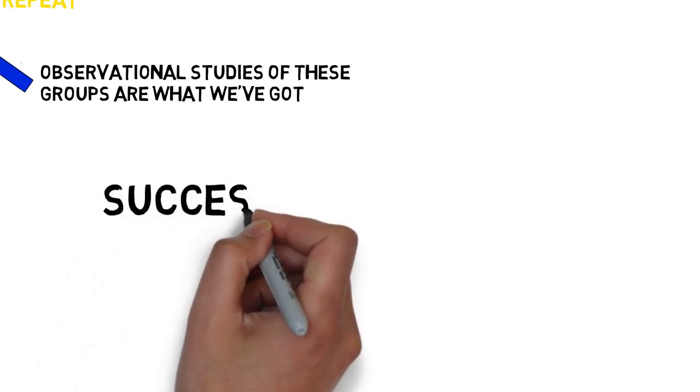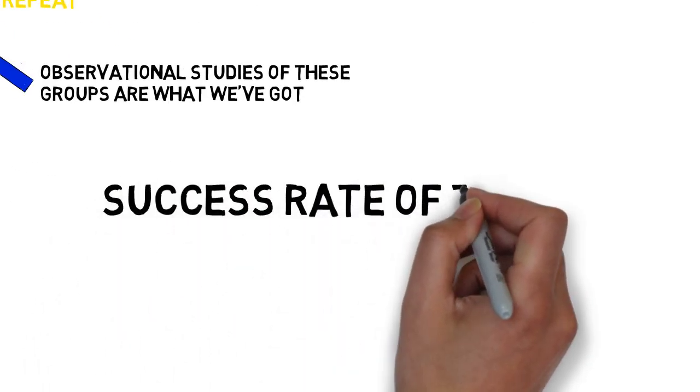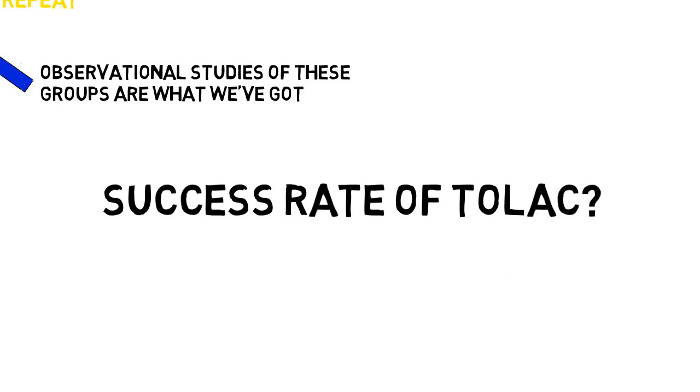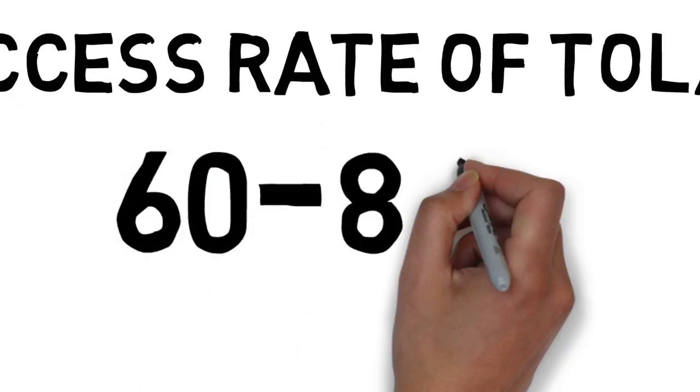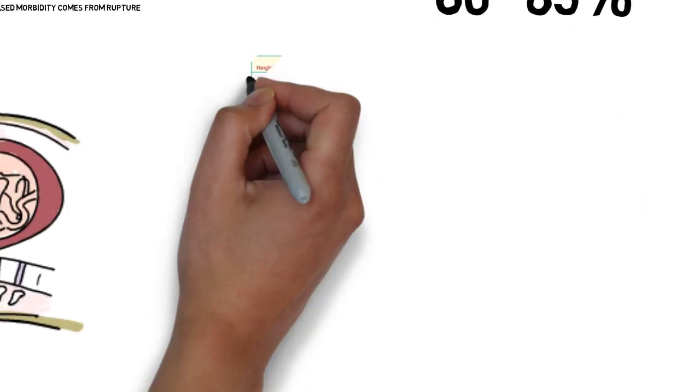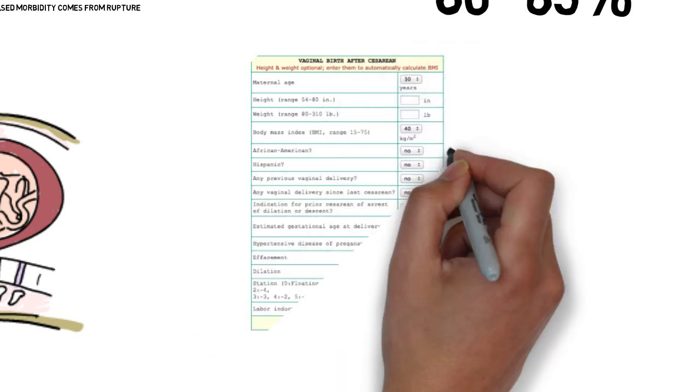Next, what is the vaginal delivery rate for TOLAC? The generally accepted rate is 60 to 80%, but that is affected by some demographic characteristics like age, race, BMI,